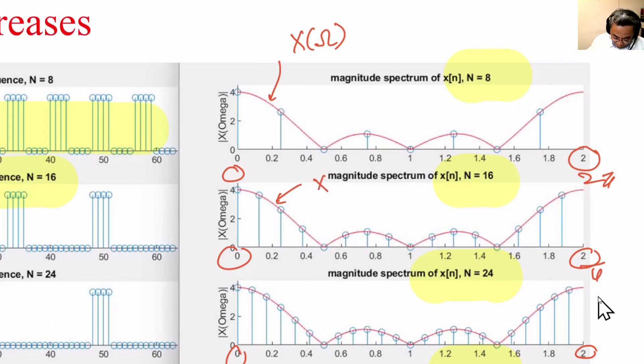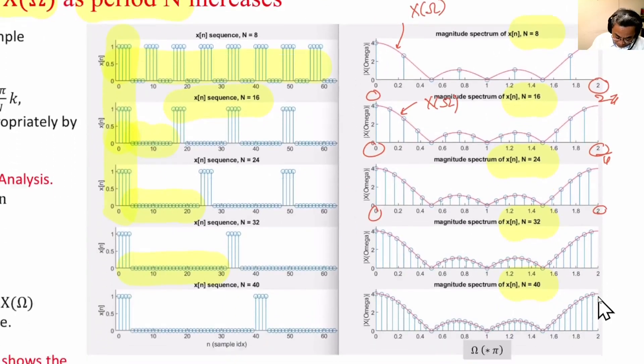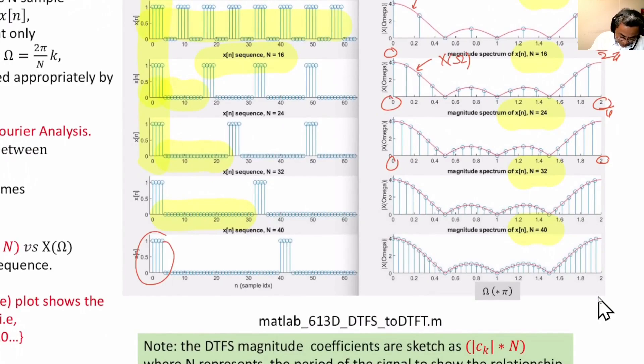So X of omega doesn't change, because X of omega is simply this signal with all zeros on the right-hand side as well as all zeros on the left-hand side. So this is for X of n, which is aperiodic.